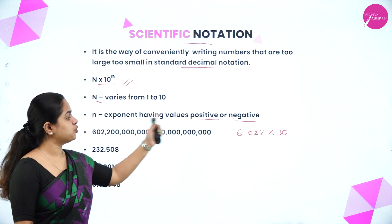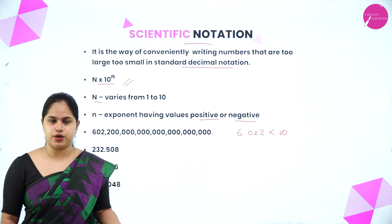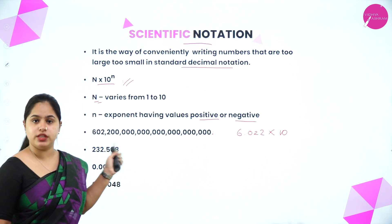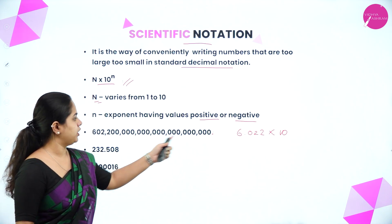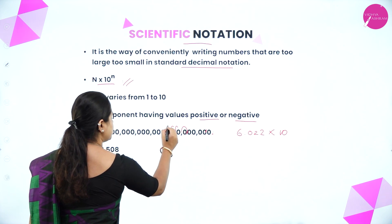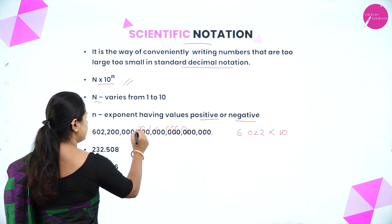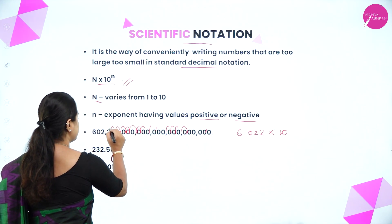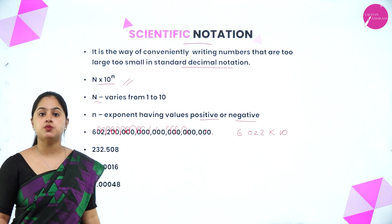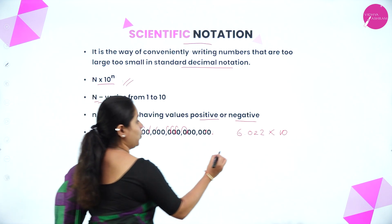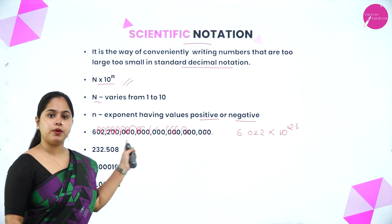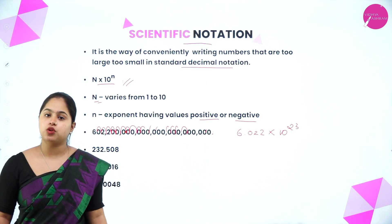Let's take the first example. For a large number with many zeros — like Avogadro's number — the decimal point needs to move so that the N value is in the range of 1 to 10. Moving the decimal point 23 places to the left gives us 6.022. Since we moved it to the left, the exponent is positive. So the final value is 6.022 × 10²³.